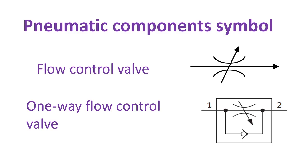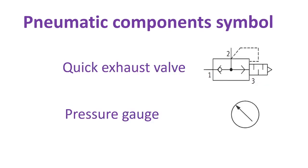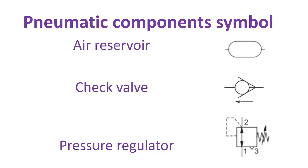Other pneumatic component symbols include: the flow control valve, the one-way flow control valve, the compressor, the filter, the quick exhaust valve, the pressure gauge, the air reservoir, the check valve, and the pressure regulator.